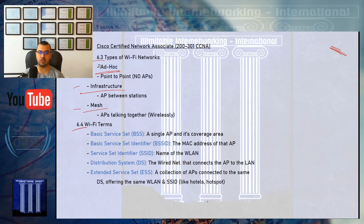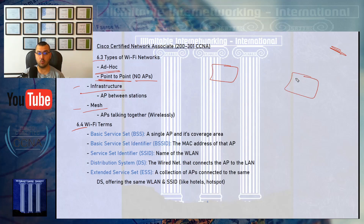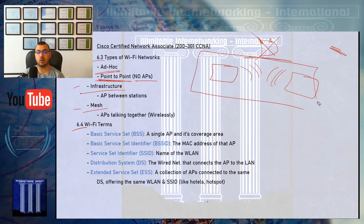Ad hoc is where you connect two stations in a point-to-point connection with the absence of access points. That happens when you have one laptop that you need to connect to another laptop wirelessly when there is no access point at all. There is no internet, no direct network connectivity, but you need to send some information or exchange data between two laptops wirelessly.